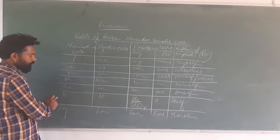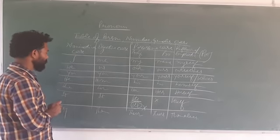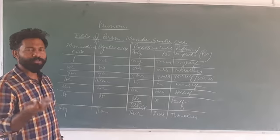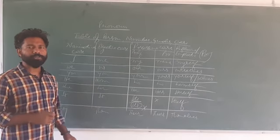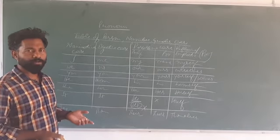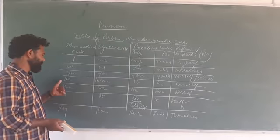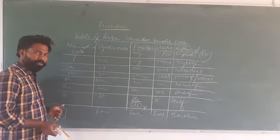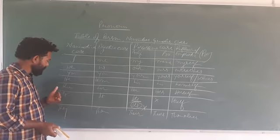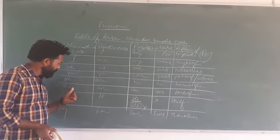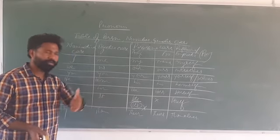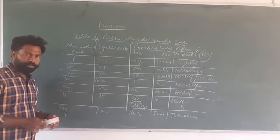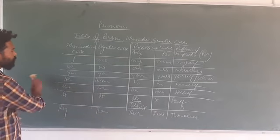Why is there no common gender row? Because common gender could be either male or female. For example, 'student' is a common gender noun — a student could be a boy or a girl. If the student is a boy, we use he/him/his/himself; if a girl, we use she/her/hers/herself. That's why we don't have a separate common gender row.